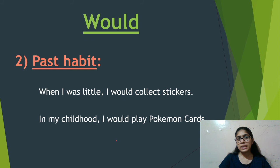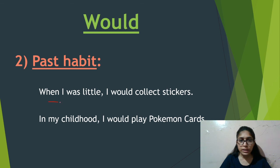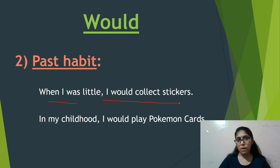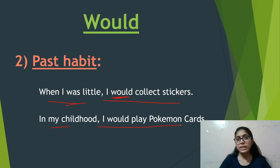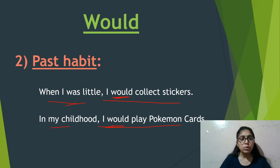Would is basically the past form of will. And it is used to show past habits. If you had a habit in the past, would is used to show it. For example: 'When I was little, I would collect stickers' — this was your past habit. 'In my childhood, I would play Pokémon cards' — playing Pokémon cards was a childhood habit. Since it is a past habit, you use would.